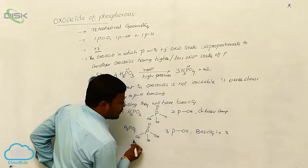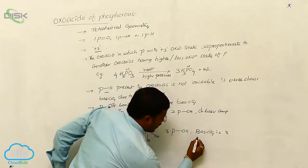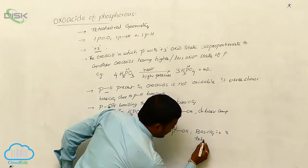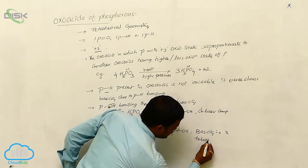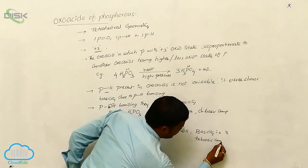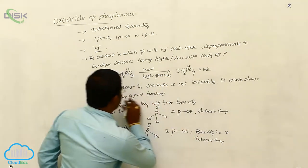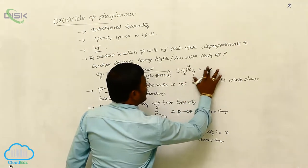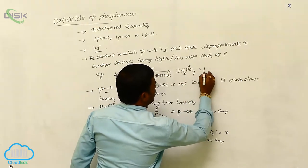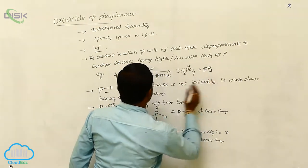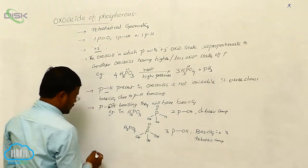The basicity of phosphoric acid is 3, also called as phosphoric acid is a tri-basic compound. Here it is PH3; phosphine is the resulting compound.